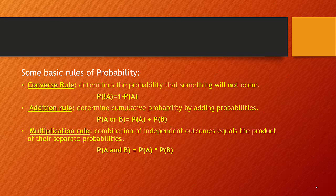The multiplication rule combines independent outcomes and produces a product of their separate probabilities. For example, if I'm flipping coins and I wanted to know the probability of flipping a head on the first time, that probability is 0.5. But if I asked: what's the probability of getting two heads in a row, we would use the multiplication rule — my probability then becomes 0.5 times 0.5, or 0.25, a 1 in 4 chance of observing two heads in a row.